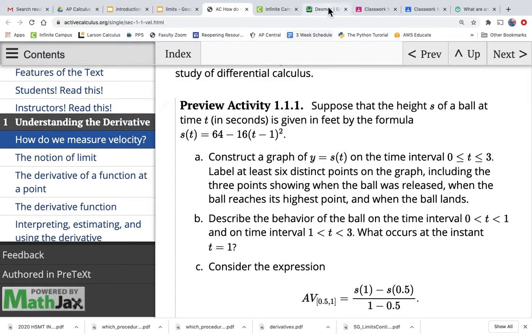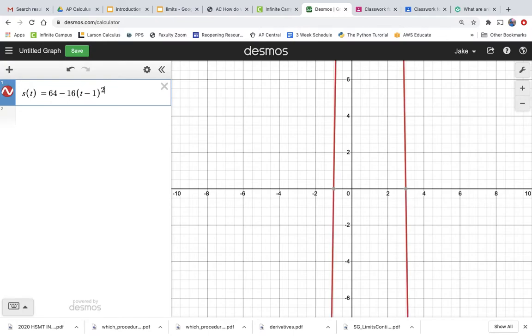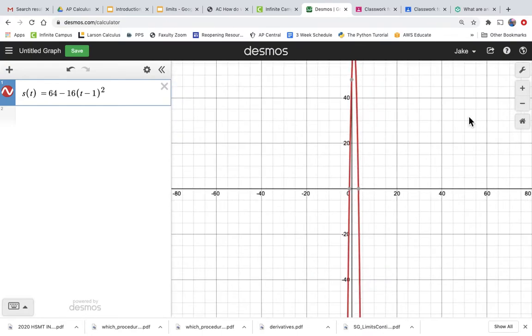So let's do that in Desmos. Let's go over to Desmos and we have this function s of t, so let's just type that in. We got s of t and what is it? It equals 64 minus 16 times the quantity t minus 1 and that whole quantity is squared. So the thing inside the parentheses is squared. And you can see our function showing up on the graph to the left.